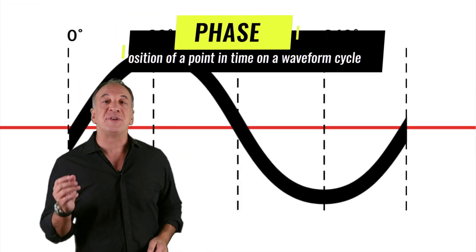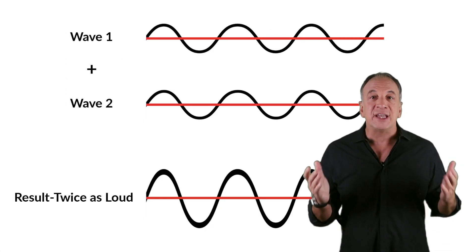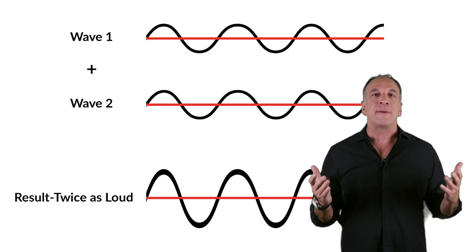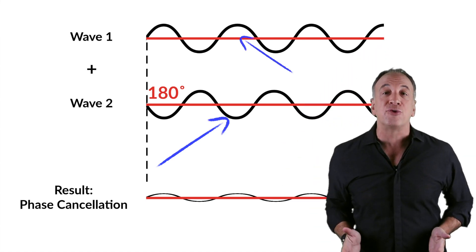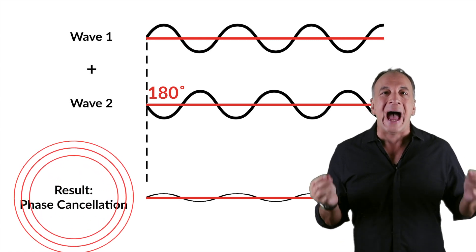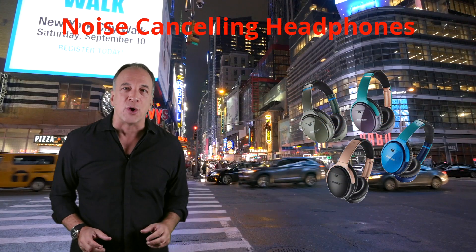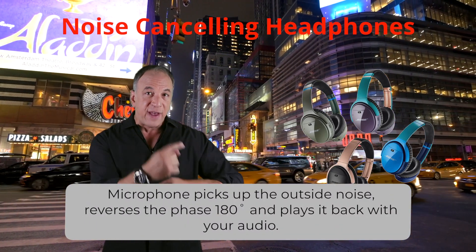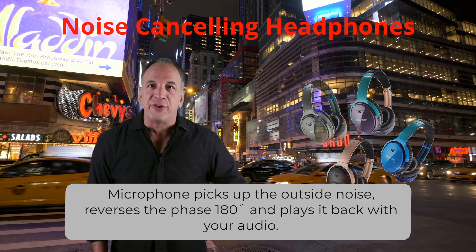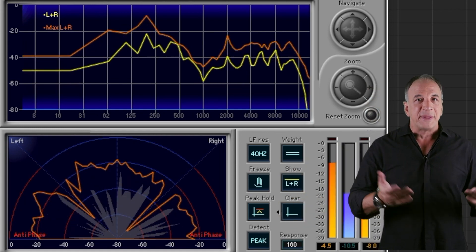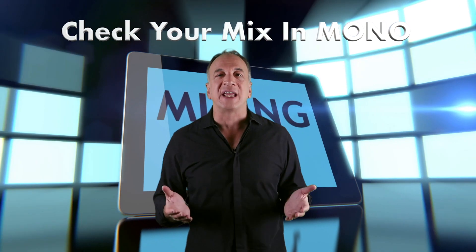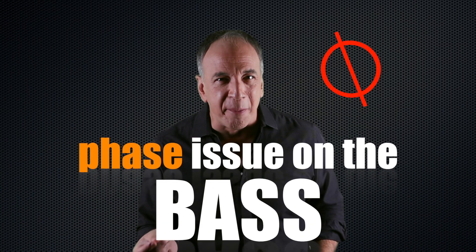Phase is the position of a point in time on a waveform cycle. If you take a sine wave and add another identical sine wave, the sound becomes twice as loud. But if you delay one of the sounds to the point where one dips when the other peaks — 180 degrees apart — the sounds will cancel out. That's what we call out of phase. And that's also how noise cancelling headphones work: the microphone picks up the outside noise, reverses the phase 180 degrees, and plays it back with your audio — the outside noise gets cancelled out. If it's more or less than 180 degrees, it can really affect the sound and emphasize or squash other frequencies — but that's how many effects plug-ins work. That's why it's so important to check your mix in mono. If the stereo bass sounds great but when you sum it to mono it virtually disappears, you have a phase issue on the bass to deal with.